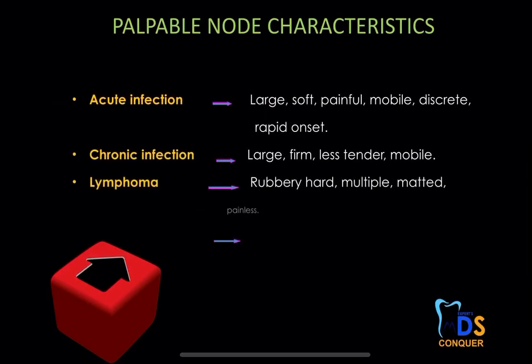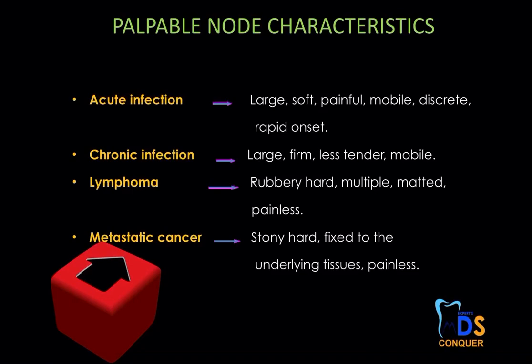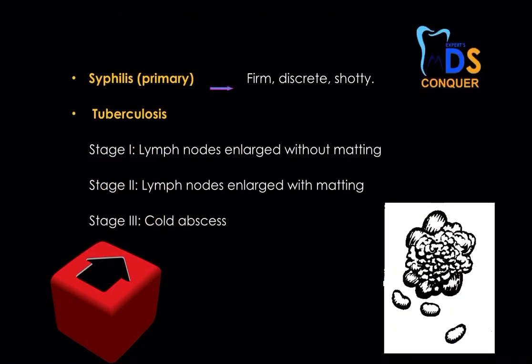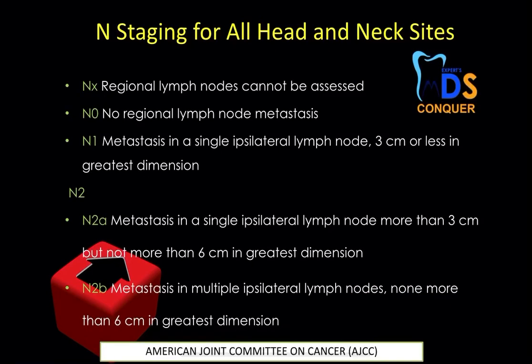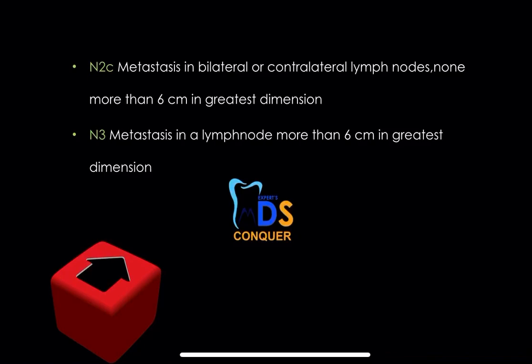Regarding palpation node characteristics: acute infection — large, soft, painful, mobile, discrete, rapid onset; chronic infection — large, firm, less tender; lymphomas — rubbery in consistency; metastatic cancer — stony hard and fixed to underlying structures; syphilis — shotty lymph nodes; tuberculosis — three stages: first stage nodes enlarged without matting, second stage matting seen, third stage cold abscess occurs. For head and neck, especially for oral medicine and oral pathology students, write the nodal staging — N-staging.